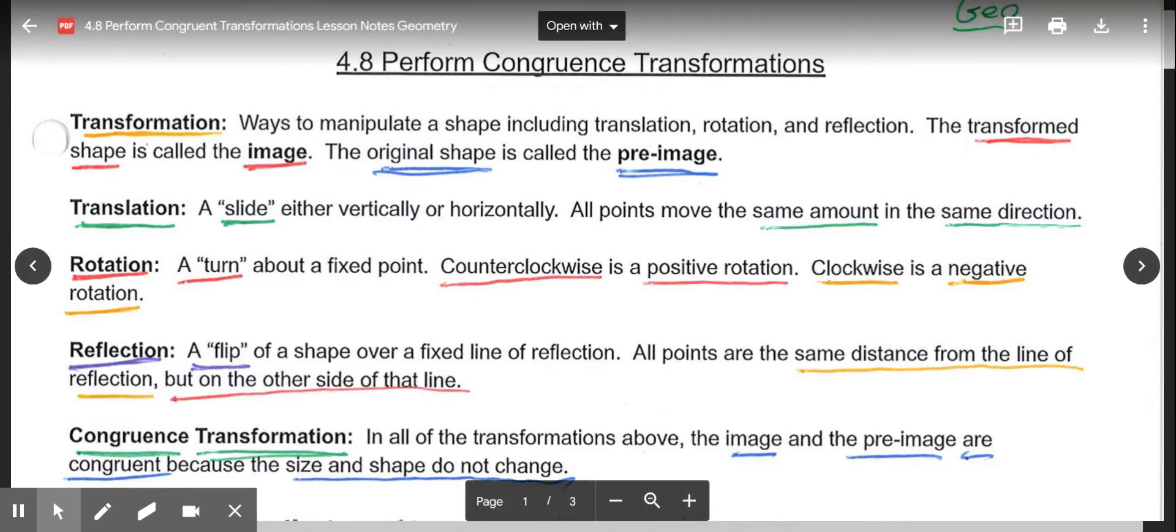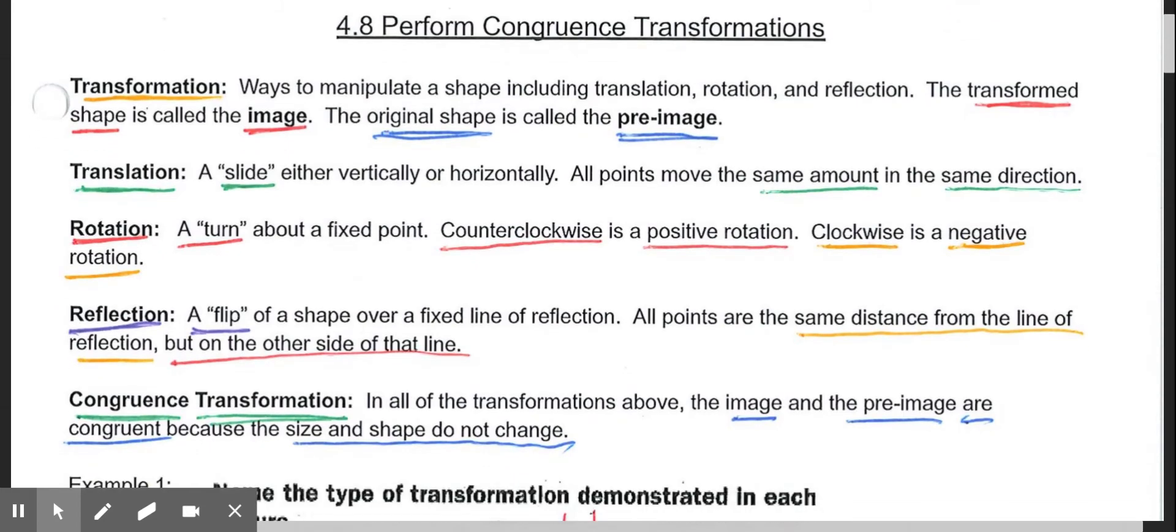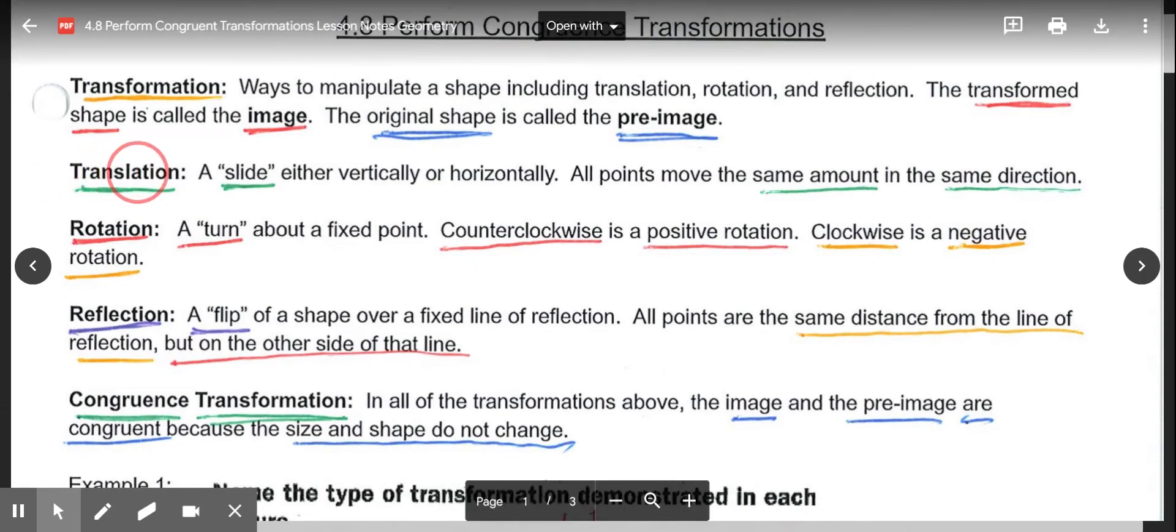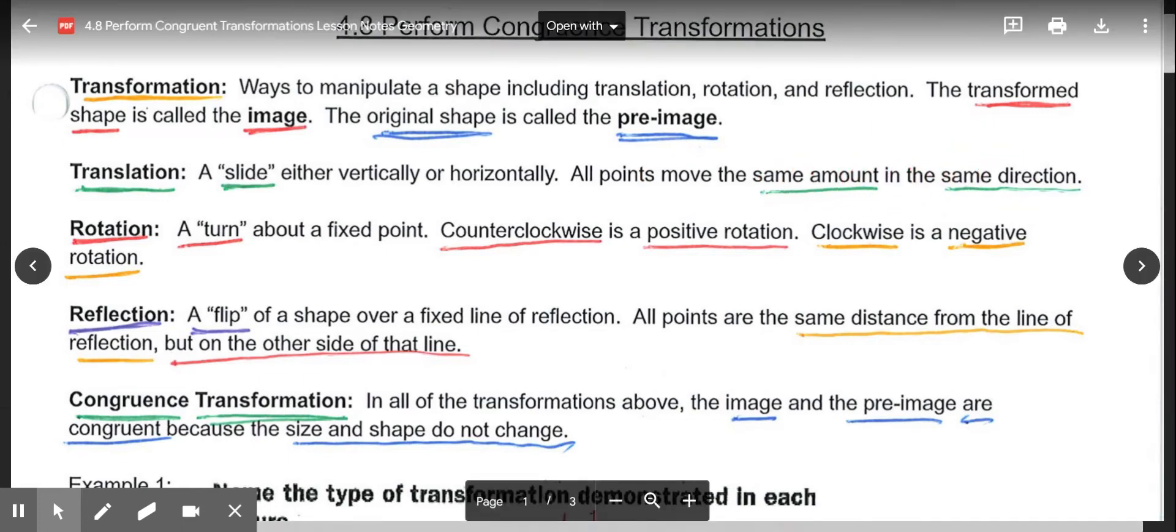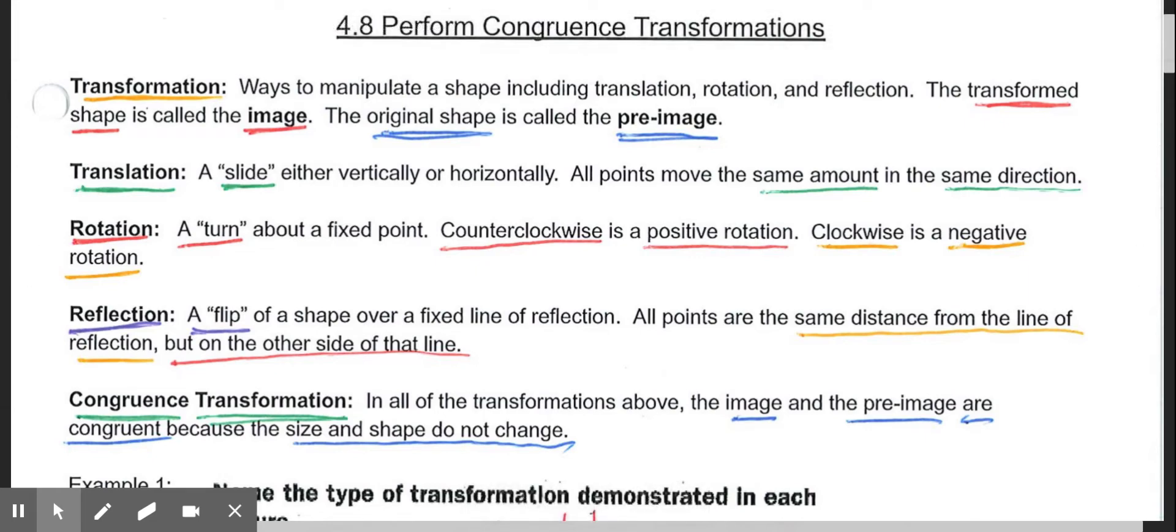So the question is, what are these translations, rotations, and reflections? You can simply think of a translation as a slide. You're just sliding the shape either vertically, horizontally, diagonally, and all the points move the same amount in the same direction. If it said translation five units up, two units right, you would slide that whole shape five units up and two units to the right.